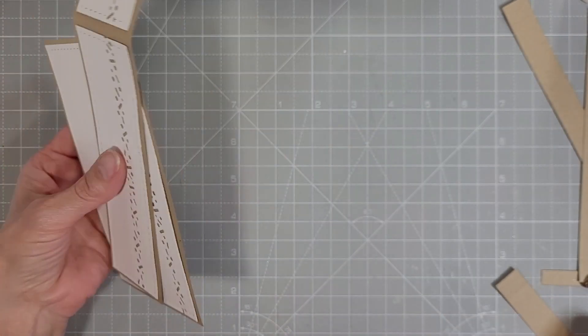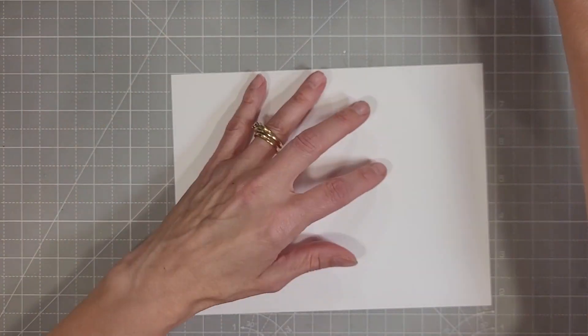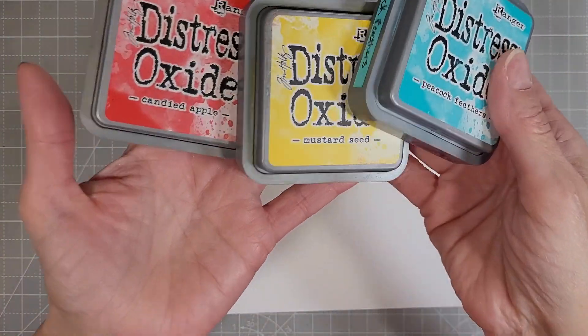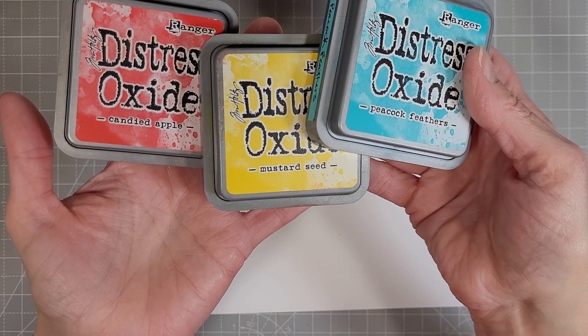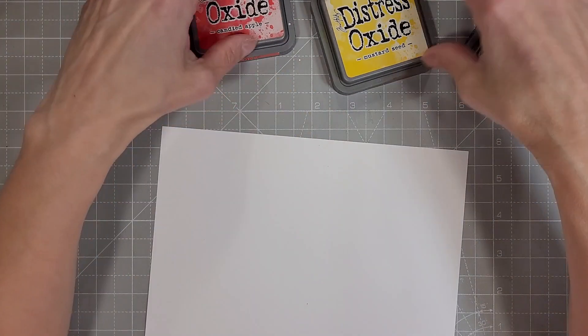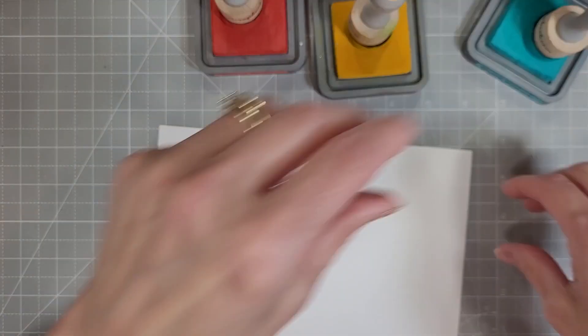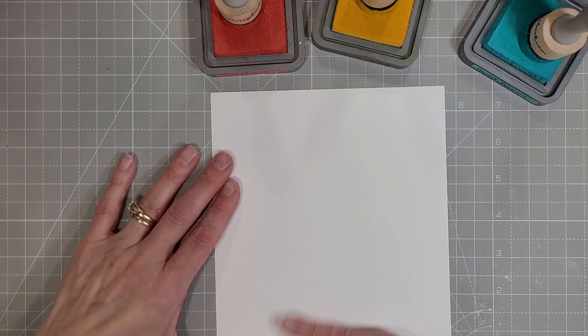So now we're going to adhere these pieces together. We'll take our little flap. Oh before that I'm not done decorating. We need to make our frosting because we're going to make some drippy frosting to go on this cake. So I've taken candied apple, mustard seed, and we're going to stir things up a little bit. We're going to use some peacock feathers.